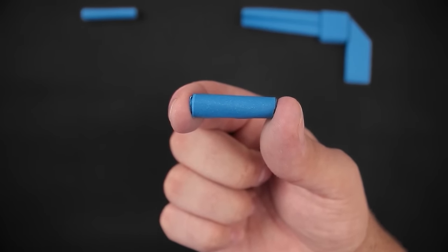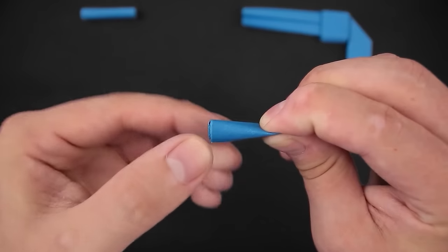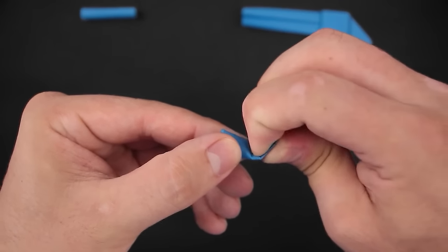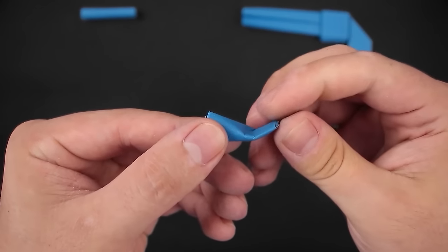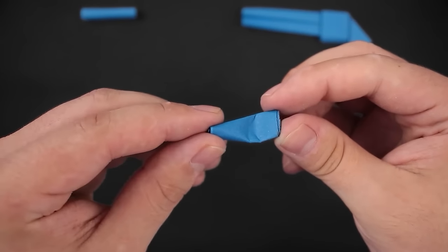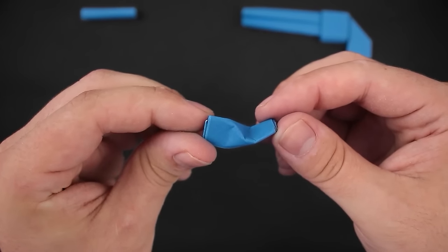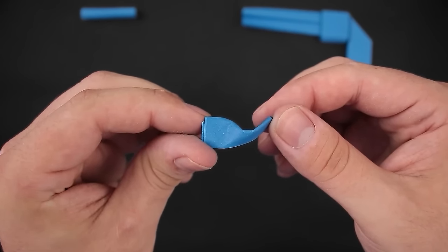In this small piece, we're going to flatten only one end for now. And then the other end, we're going to flatten in the opposite direction. Something like this. Now, fit this piece back here.